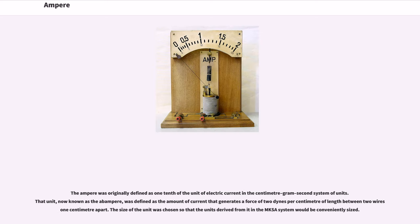The ampere was originally defined as one-tenth of the unit of electric current in the centimeter-gram-second system of units. That unit, now known as the abampere, was defined as the amount of current that generates a force of two dynes per centimeter of length between two wires one centimeter apart. The size of the unit was chosen so that the units derived from it in the MKSA system would be conveniently sized.